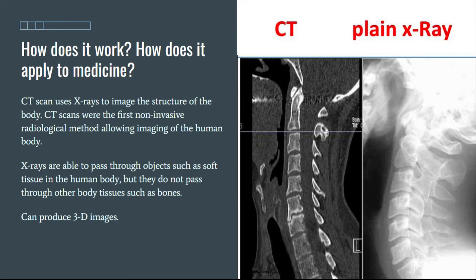In a CT scan, it rotates the imaging around your body in a circular motion. That way, you have a bunch of 2D images that, when put together, can create a large 3D scan of the inside of your body. This is a very big improvement over a plain x-ray machine, which can only produce one 2D image from one angle.